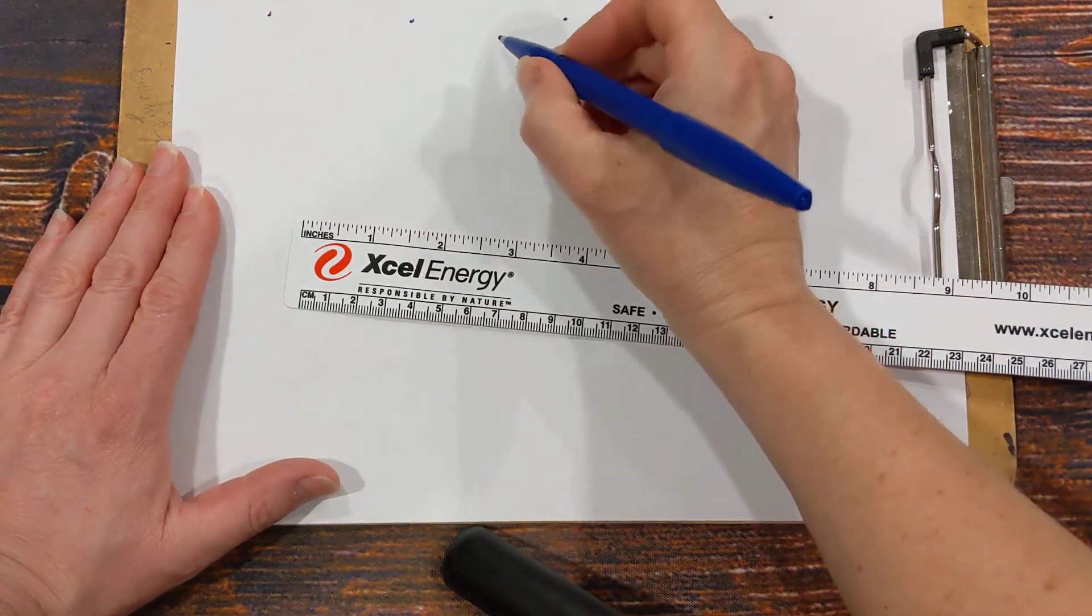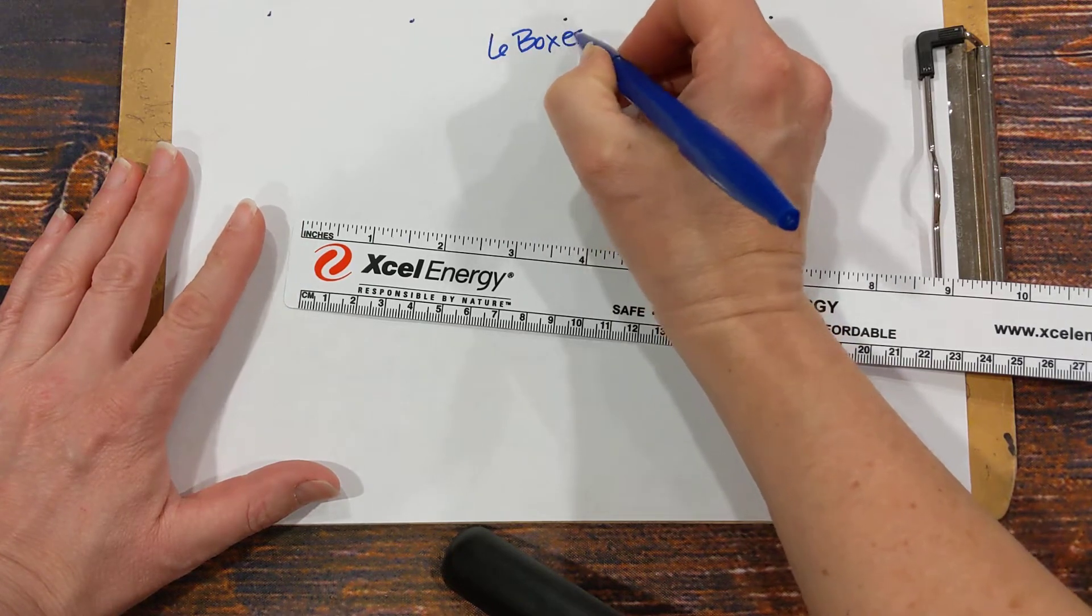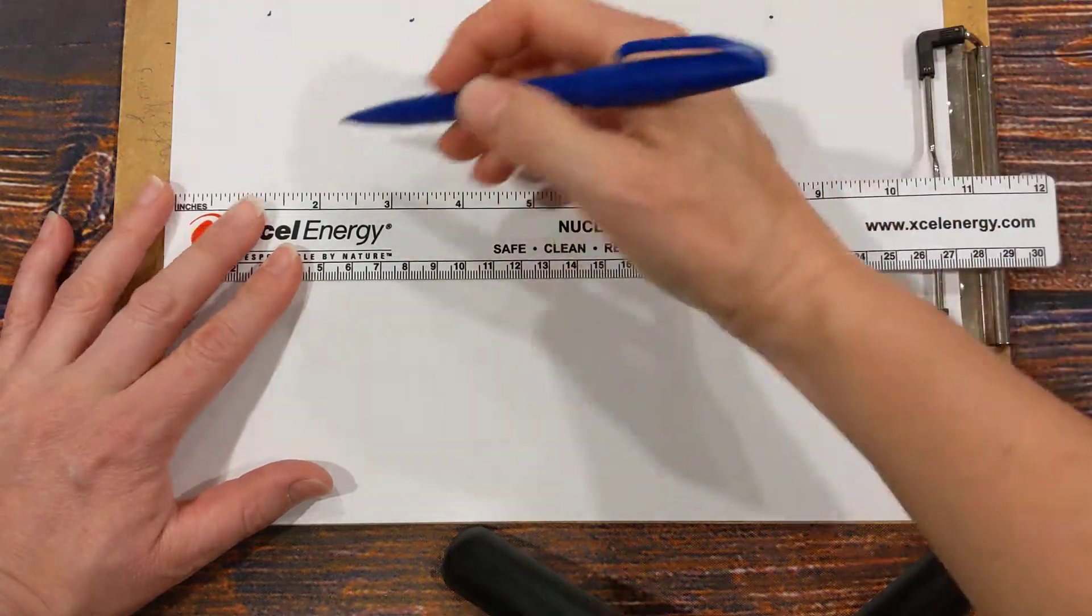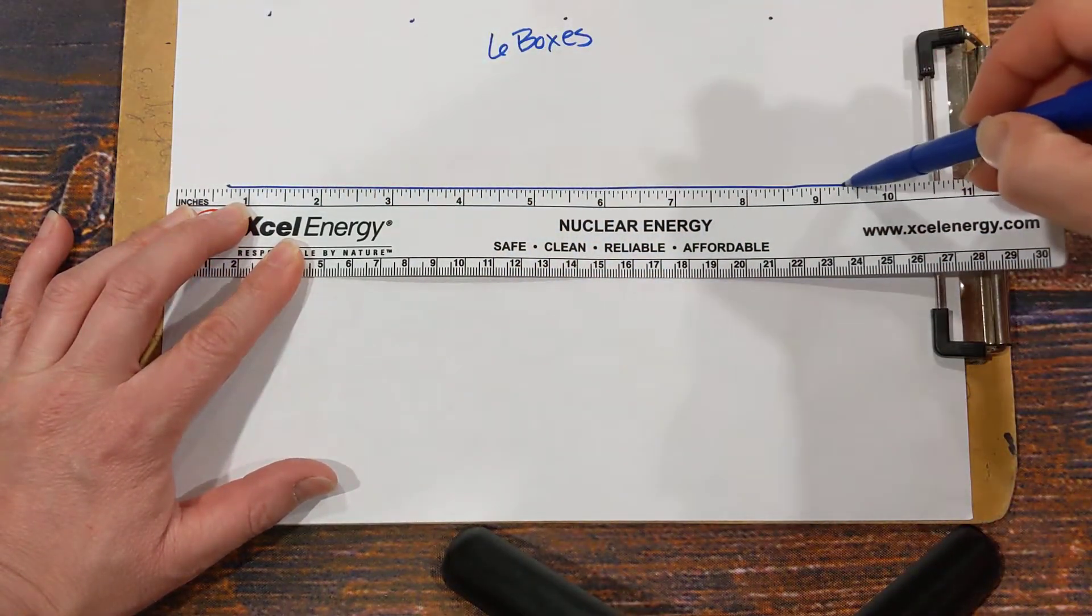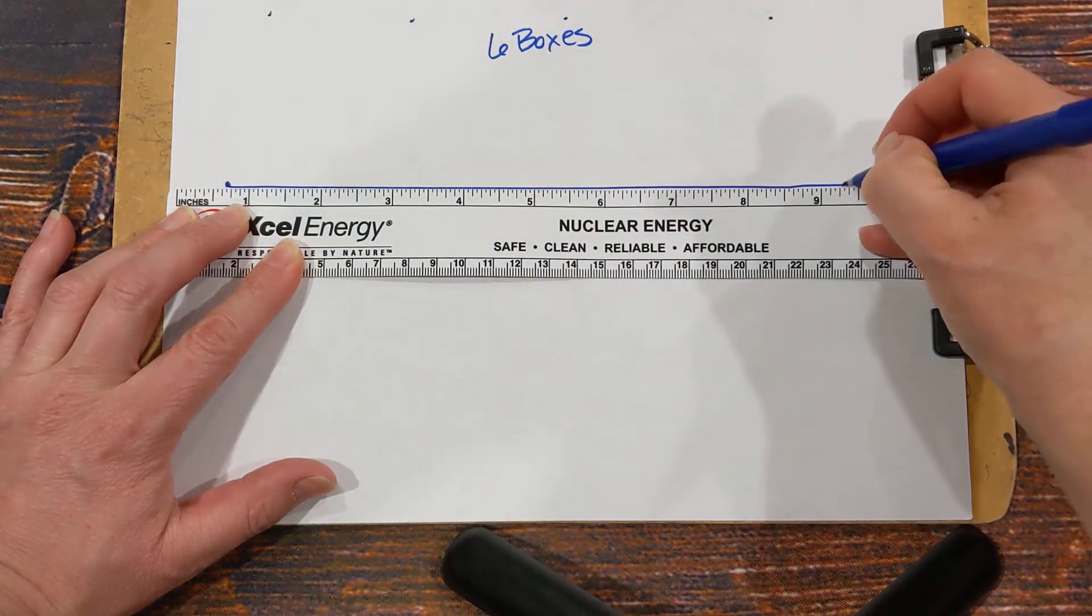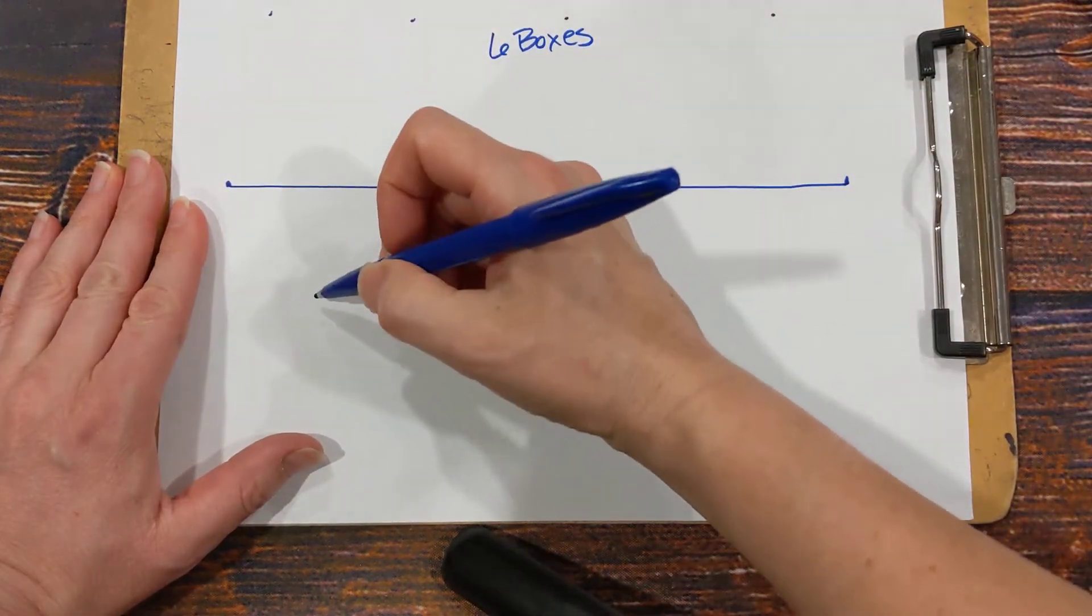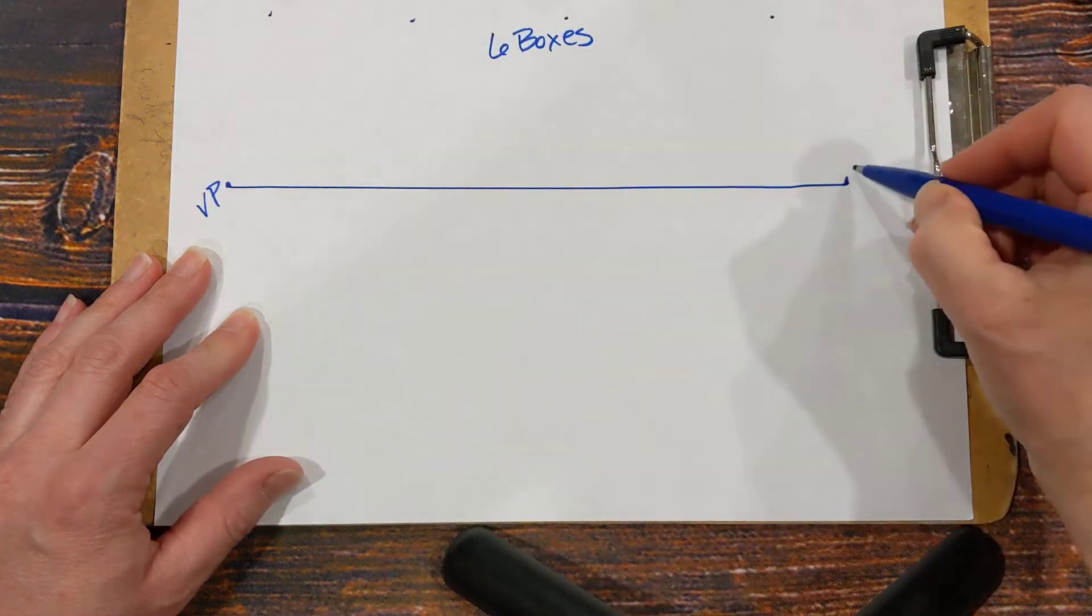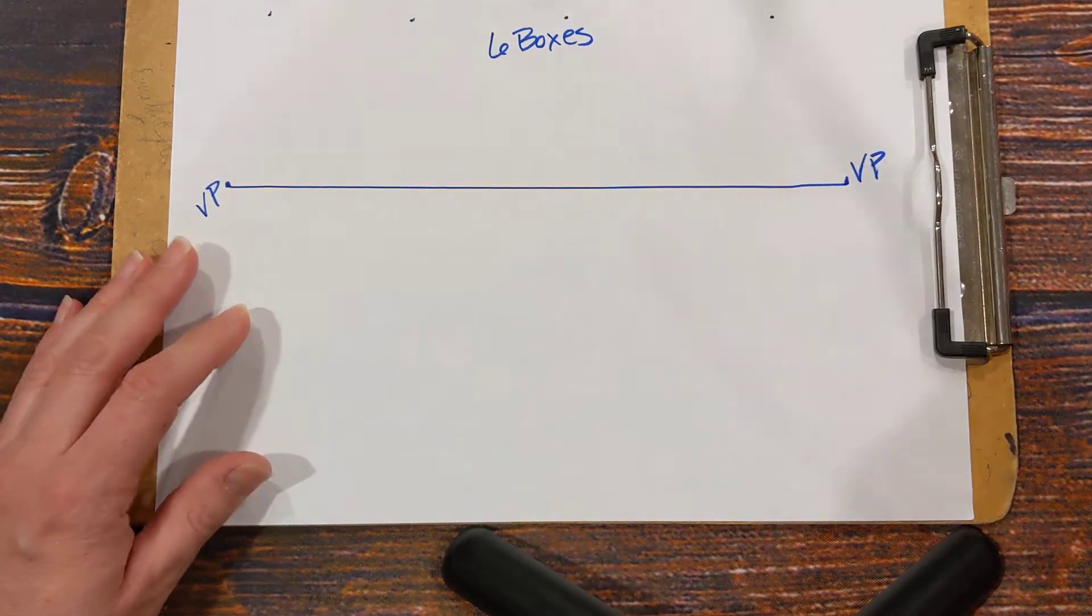Okay everybody, I am back and helping you to do the six boxes. So first thing is we are going to put a horizon line on our paper. Now as we do this, what you could do is you could stop the video, do what I do, and then restart the video. Okay, so I've got my VP over here, vanishing point here, and vanishing point. Remember this is a two-point exercise which means you've got to have two vanishing points.